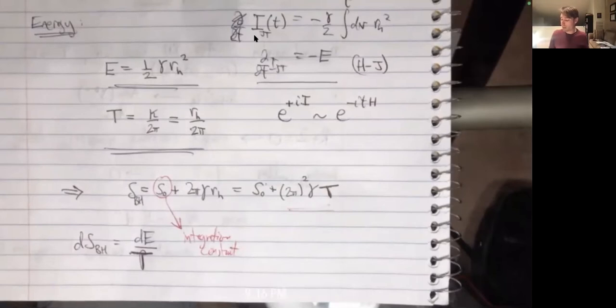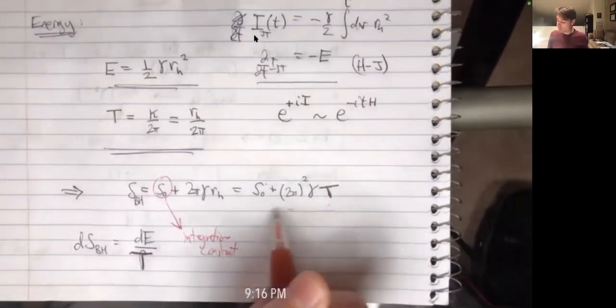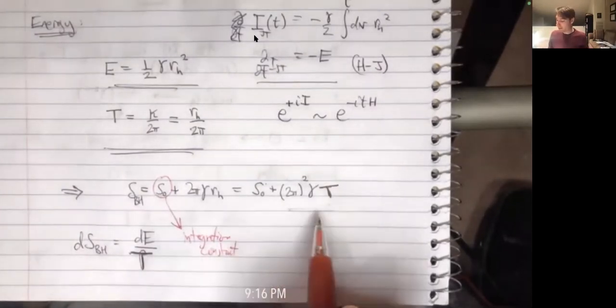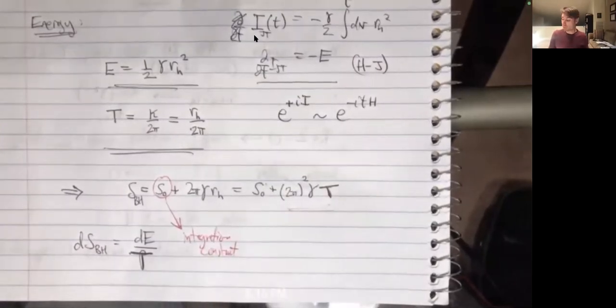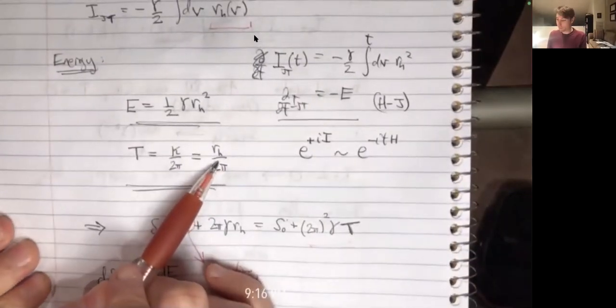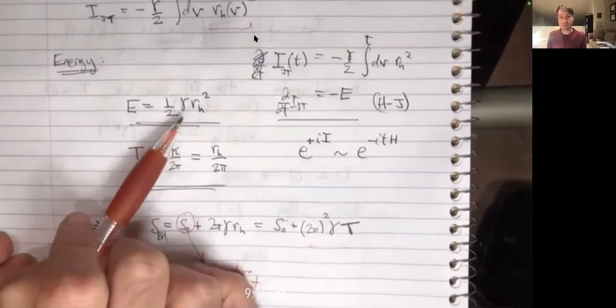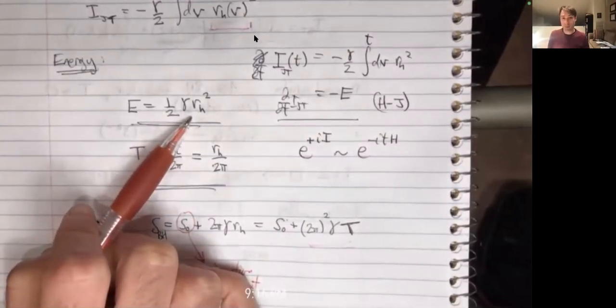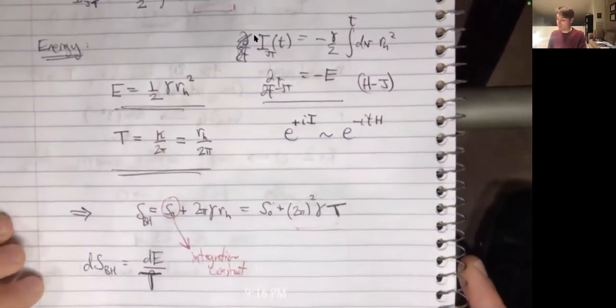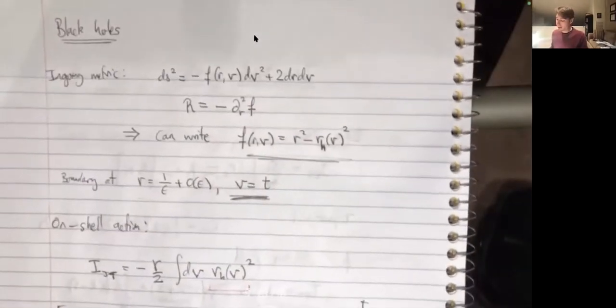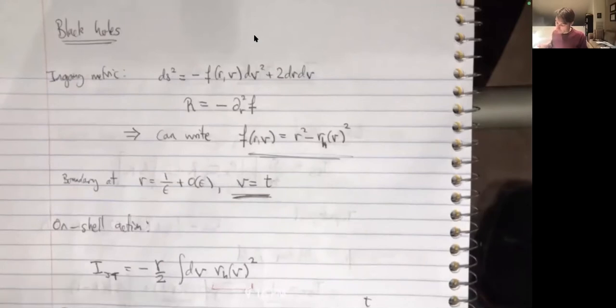The entropy is linear in the temperature. One thing to note: these black holes have nice thermodynamics compared to asymptotically flat Schwarzschild black holes — in particular they have a positive specific heat. If you increase the temperature, that means a larger horizon radius, which also increases the energy. Schwarzschild black holes have strange thermodynamics, but here we have simple, well-behaved thermodynamics.